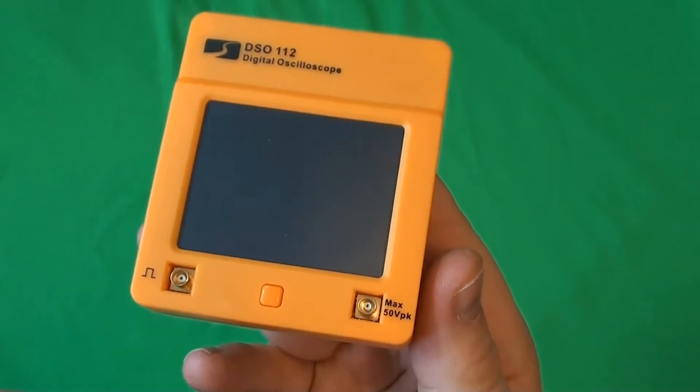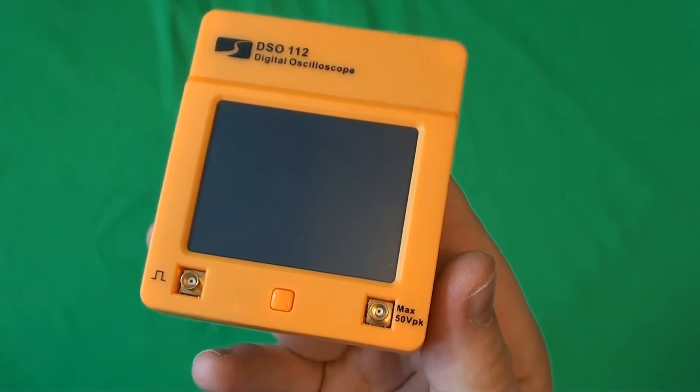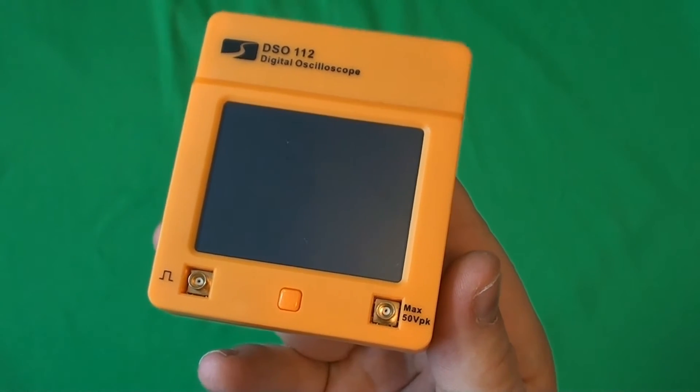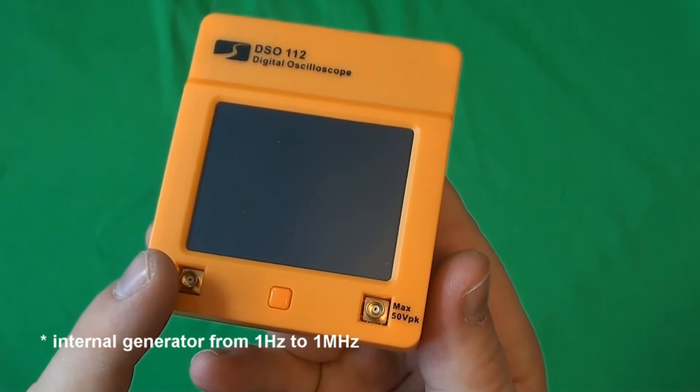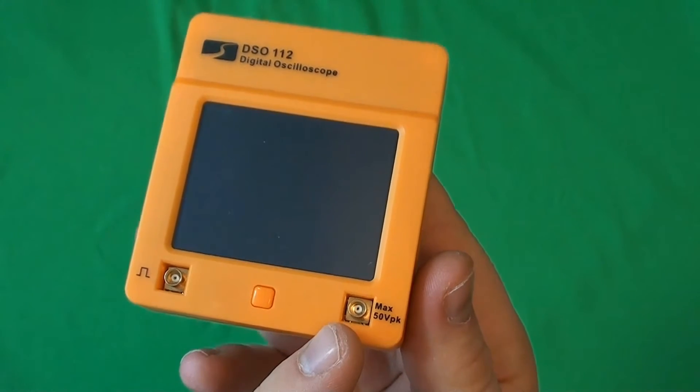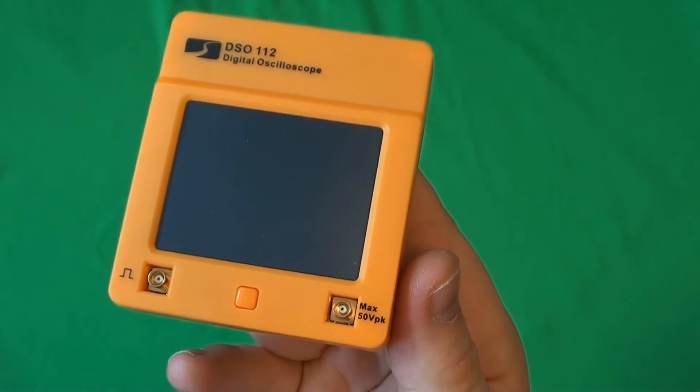Let's have a close look at the main unit. There are two ports here for probes. This one is the internal generator and this one is the input. There's only one button.